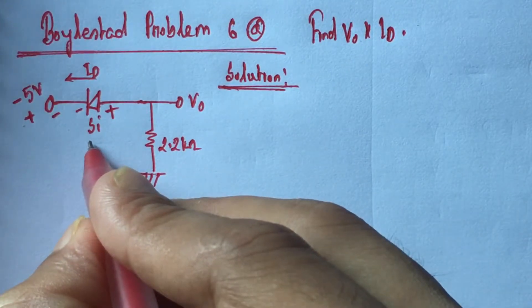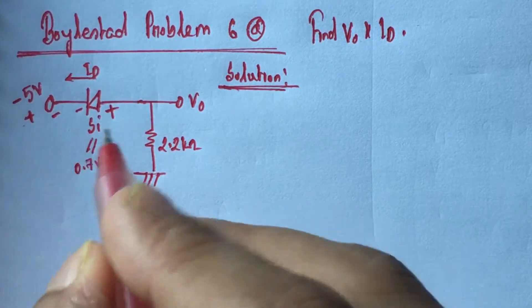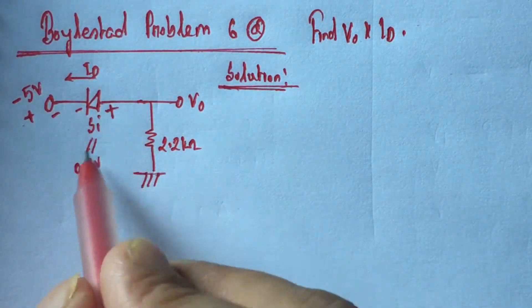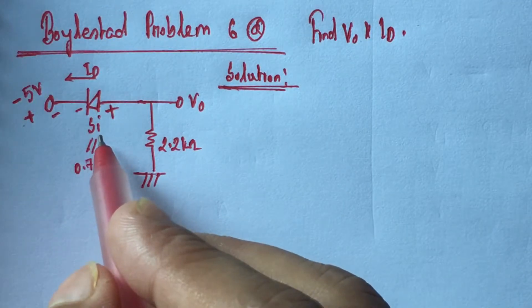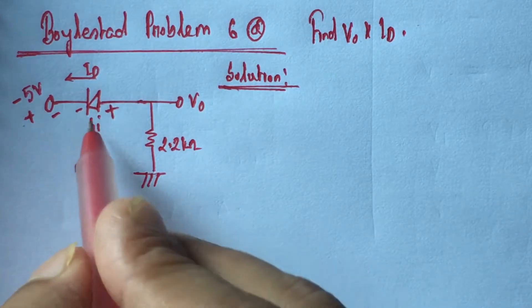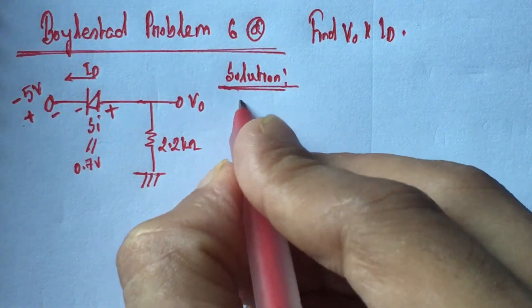And we know that the voltage drop of a silicon diode is 0.7 volts. Now we see that the biasing voltage 5 volts is greater than the voltage drop of silicon which is 0.7 volts, and the diode is forward biased. So the diode will be on.